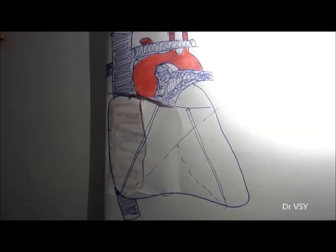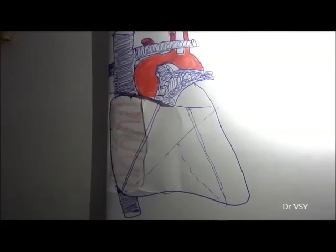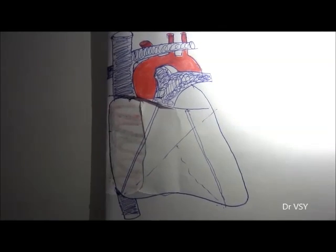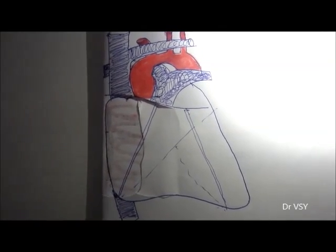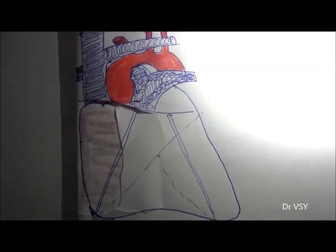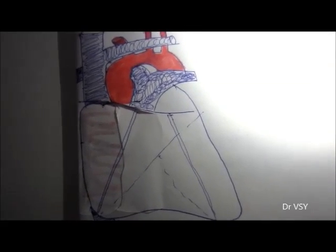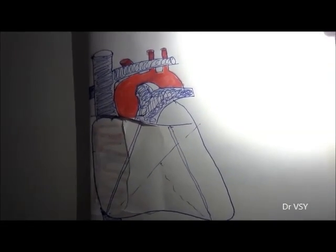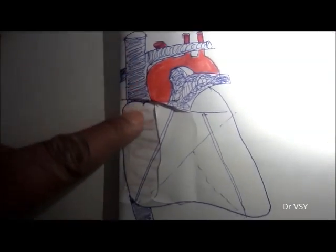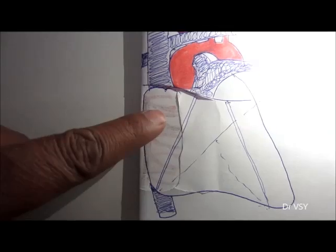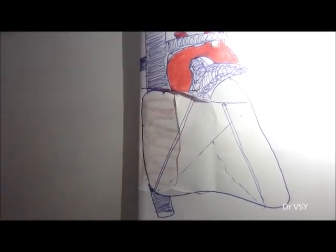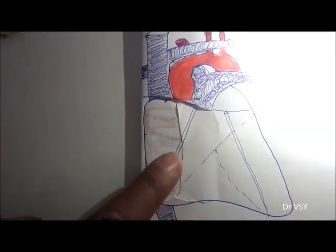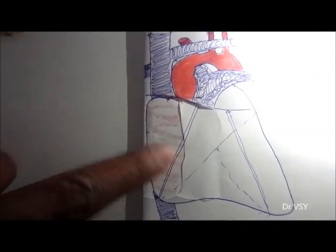Hi friends. Today we are going to explain the right atrium. As you can see here, this part is the right atrium, which is being separated from the right ventricle by this coronary sulcus right here.